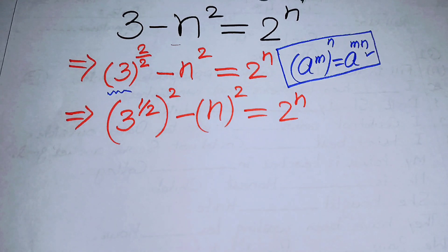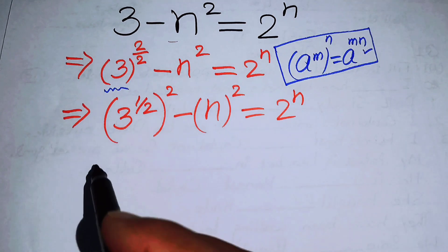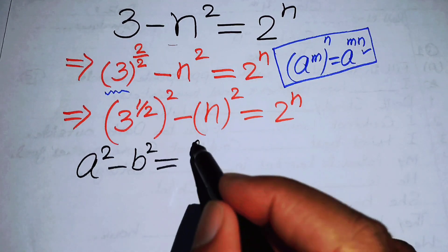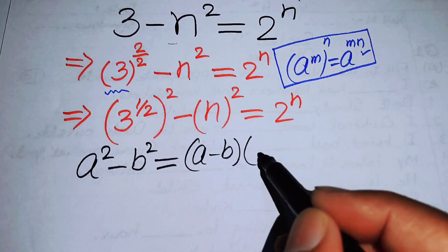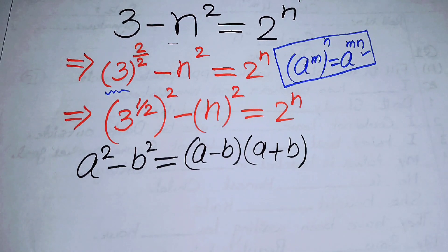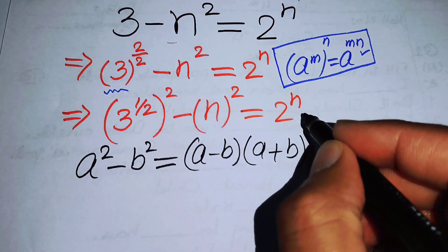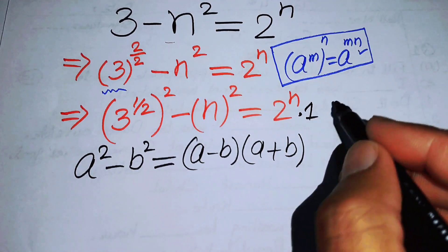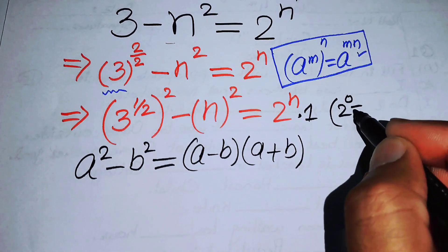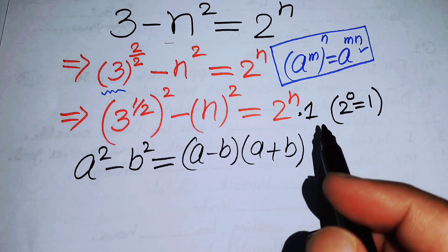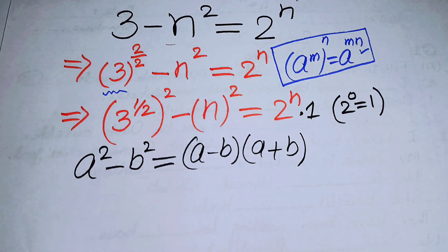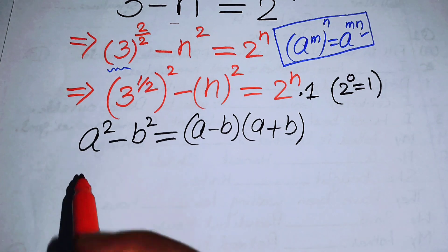In the next step we use the difference of squares identity: a squared minus b squared equals (a minus b)(a plus b). On the right hand side, 2 to the power of n is multiplied by 1, and we write this 1 as 2 to the power of 0, since anything to the power of 0 equals 1.